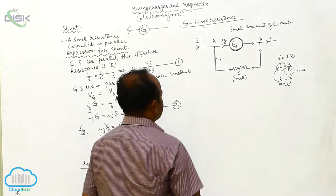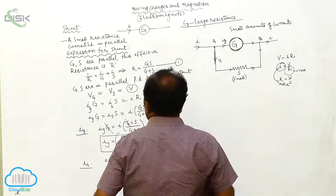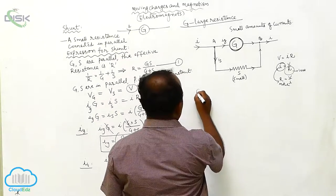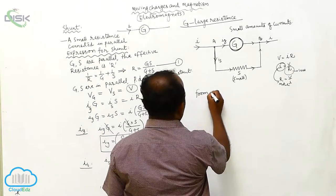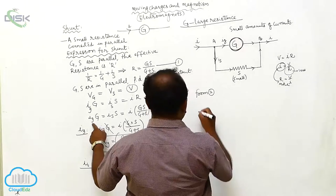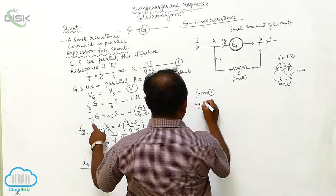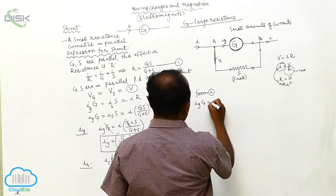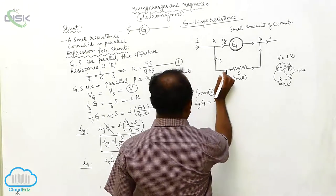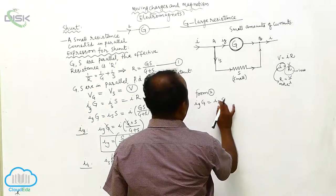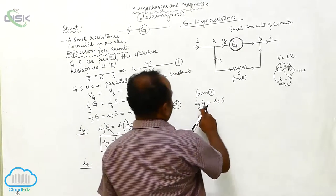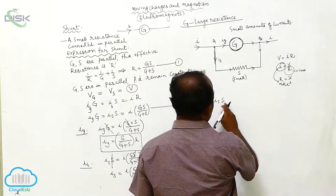What is the expression for shunt? From the second equation, Ig into G is equal to Is into S. Therefore, Ig into G is equal to Is into S.